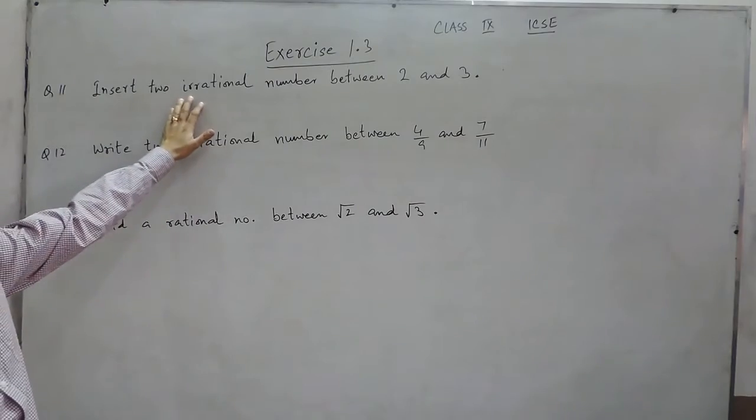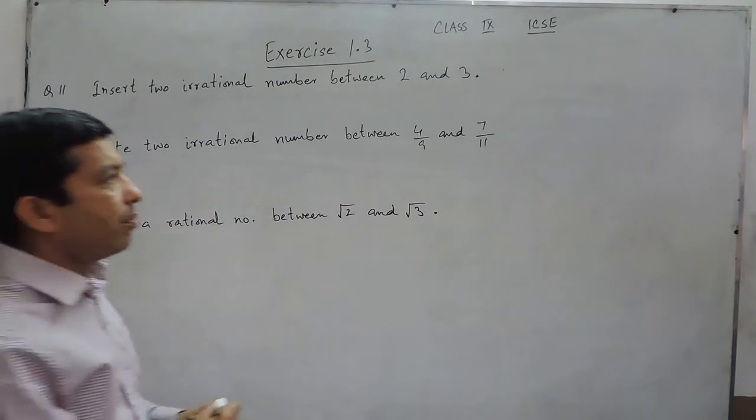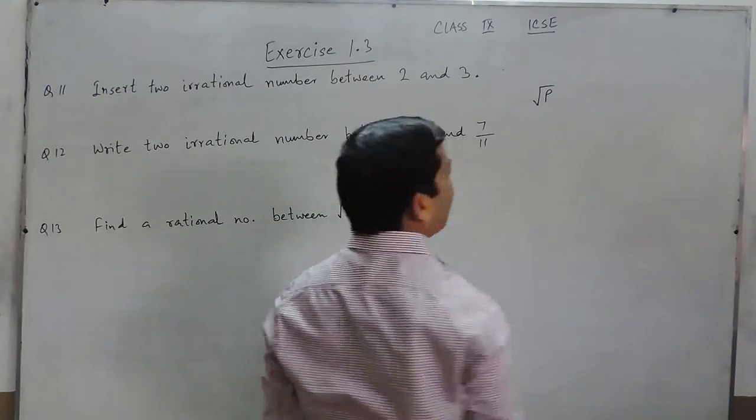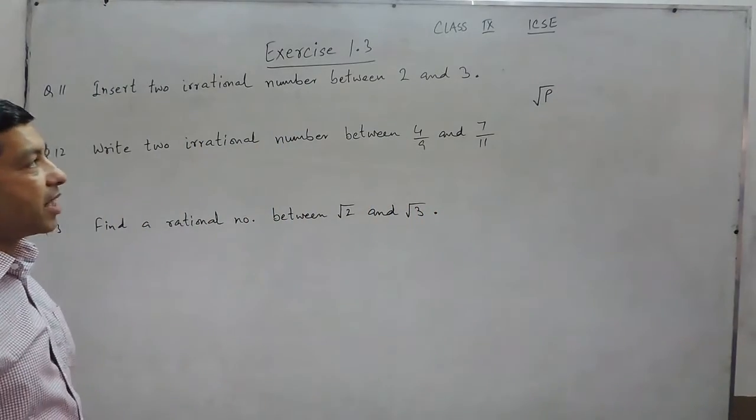As we already know, the irrational numbers are the ones which are basically in the form of under root p, where p is not a perfect square.